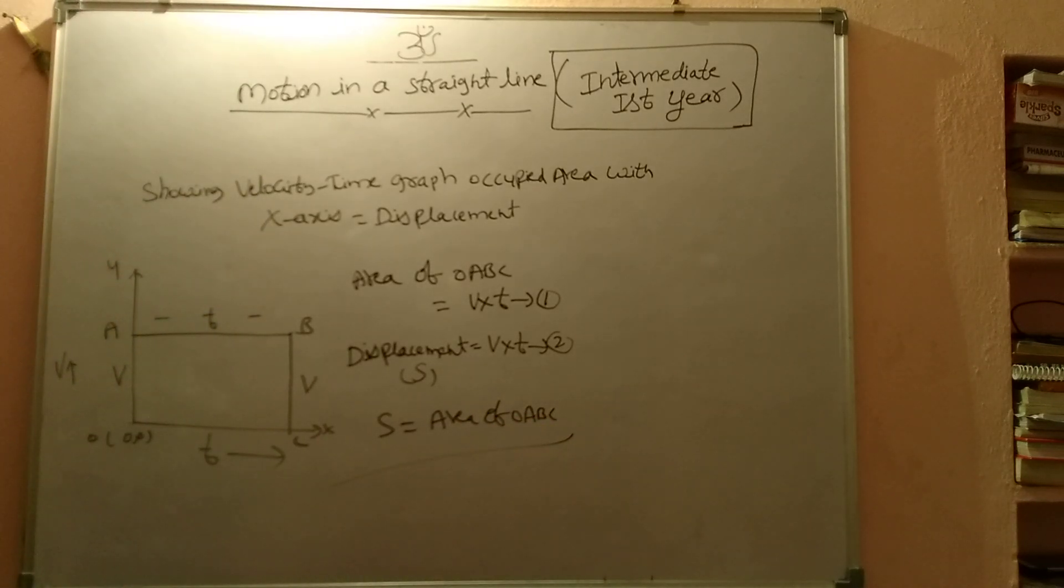So now, velocity time curve occupying area with x-axis is equal to displacement. This is our derivation.